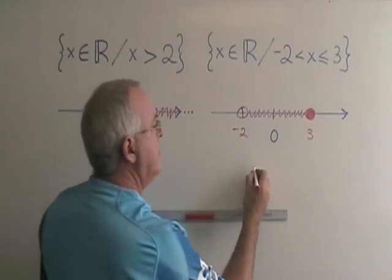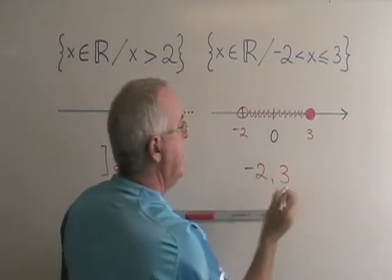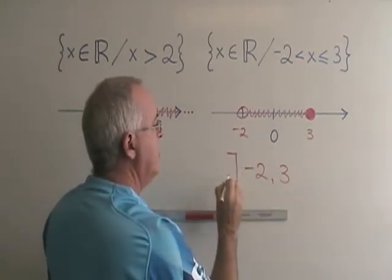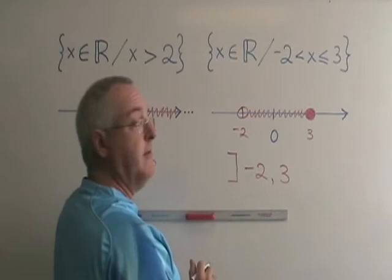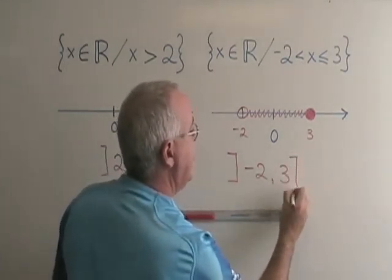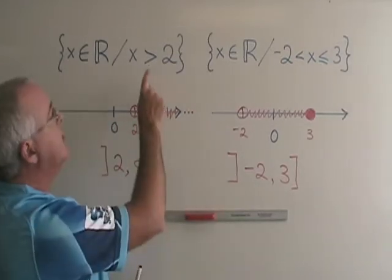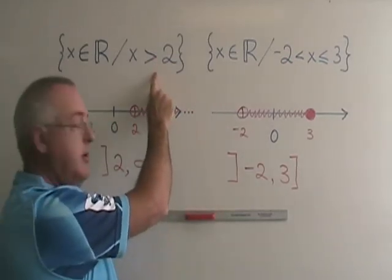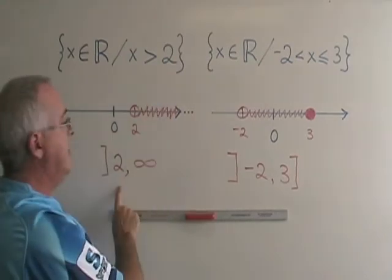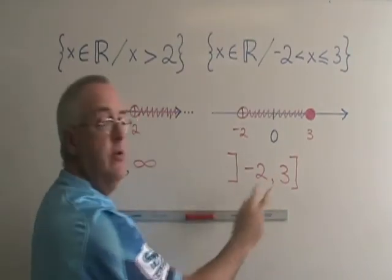Over here, I have two limits. I have negative 2, then a comma, and I have 3. The negative 2 is not included, so my square bracket points away from the negative 2. The 3 is included, so my square bracket points towards the 3. This is how we translate from set-builder notation to interval notation, in a situation where there is only one limit, or where we have the numbers in between two limits.